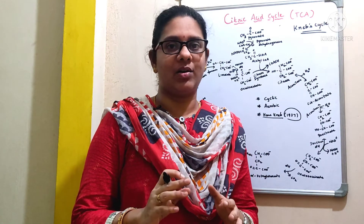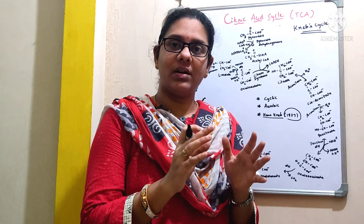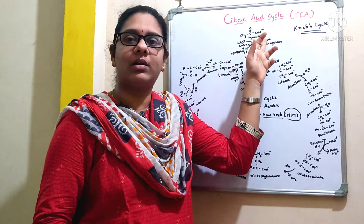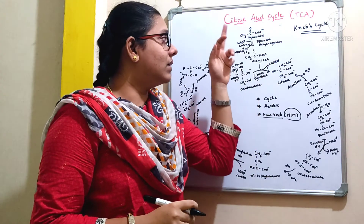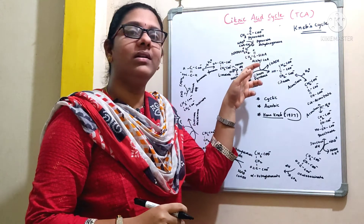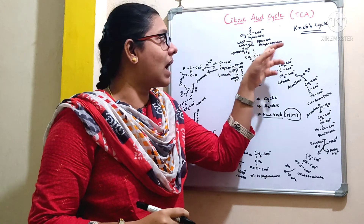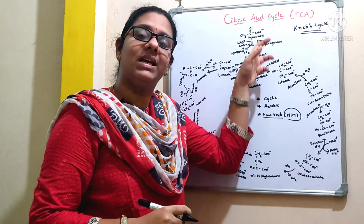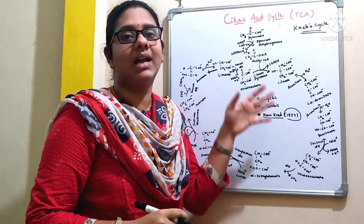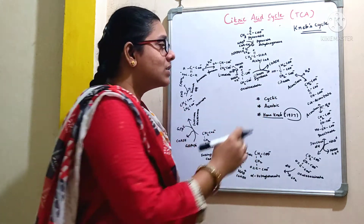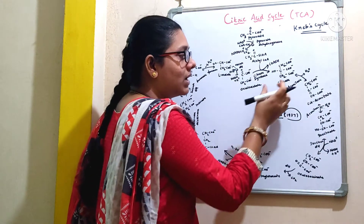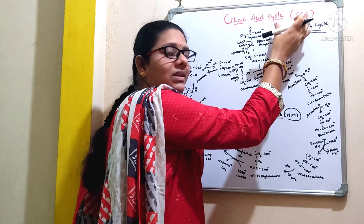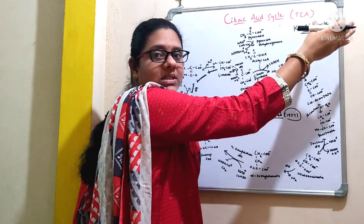In my previous video, we discussed about glycolysis, where the sugar glucose is broken down by a series of steps giving rise to an end product of pyruvate. That so formed pyruvate is converted to acetyl-CoA by the action of an enzyme called pyruvate dehydrogenase. This is the linking step between the glycolysis and the TCA cycle. If you observe the pathway here, the intermediate citrate is formed, and that is the reason we are calling this cycle as tricarboxylic acid cycle.